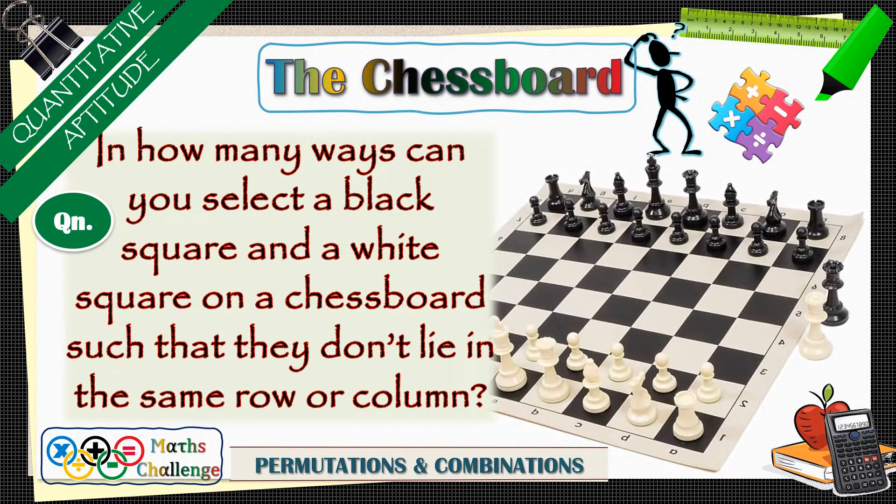The question is: in how many ways can you select a black square and a white square on a chessboard such that they don't lie in the same row or column?